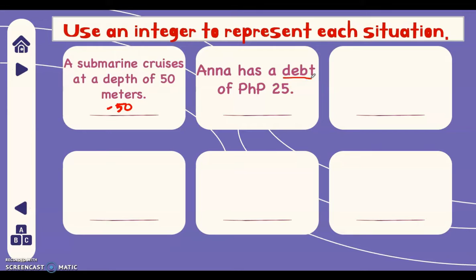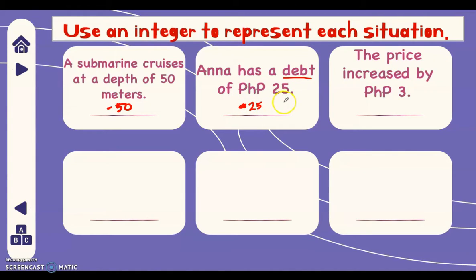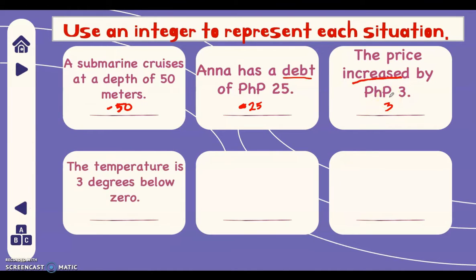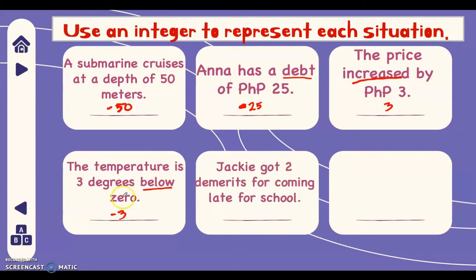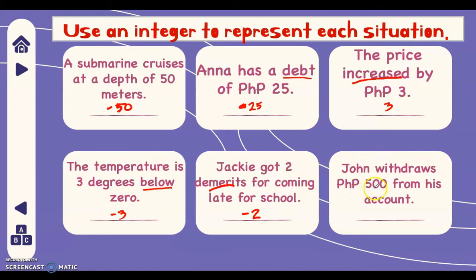Next, the price increased by three pesos. Our keyword here is 'increased,' which means it's positive, so we write positive three. Another situation: the temperature is three degrees below zero. Our keyword here is 'below,' which means it represents a negative integer, so we write negative three. Another one: Jackie got two demerits for coming late to school. 'Demerits' represents negative, therefore we write negative two.